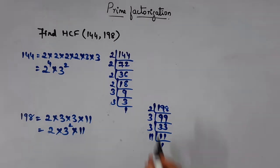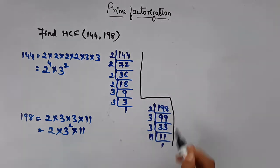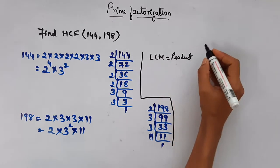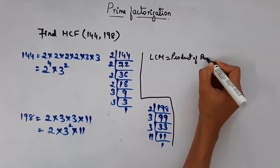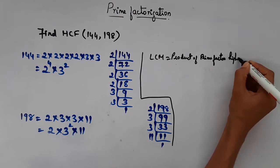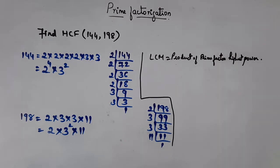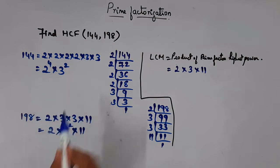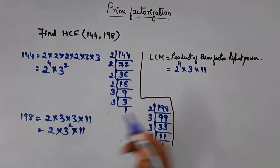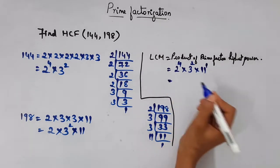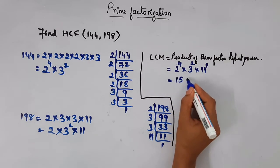So now LCM is given by the product of prime factors with the highest power. The prime factors are 2, 3, and 11. In the case of 2, the highest power is 4. For 3, the highest power is 2. And for 11, it is 1. So the LCM is 1584.